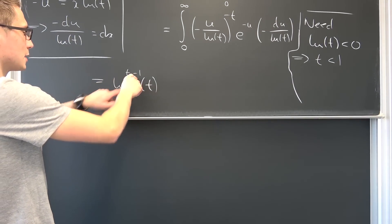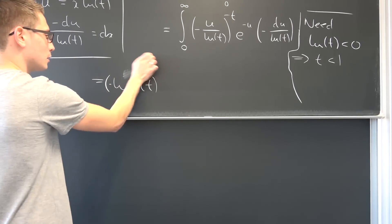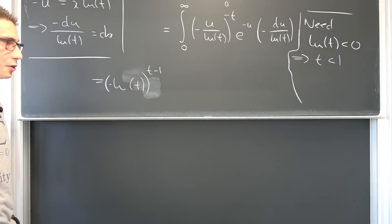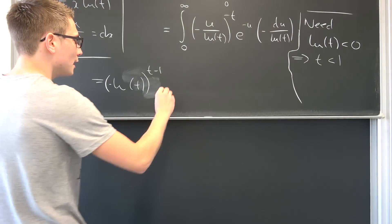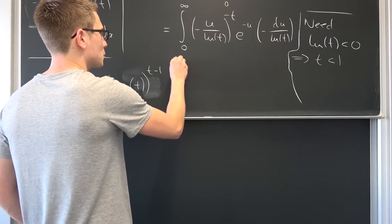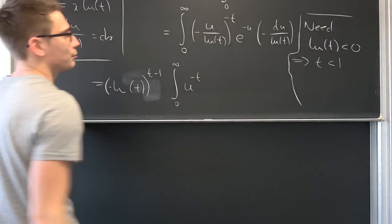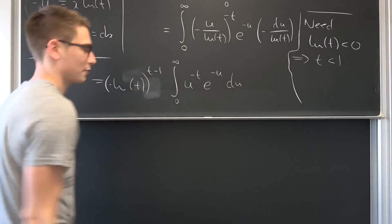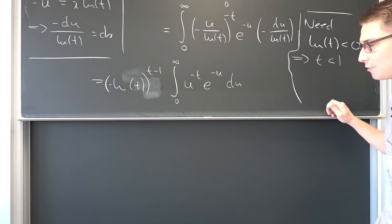So we can say this is negative natural log of t to the t minus one power. I hope you can see where all of this came from. And also we have our integral from zero to infinity of u to the negative t power, e to the negative u, integrated with respect to u. And now that the hardest part is done, we can make use of our beloved gamma function yet again.